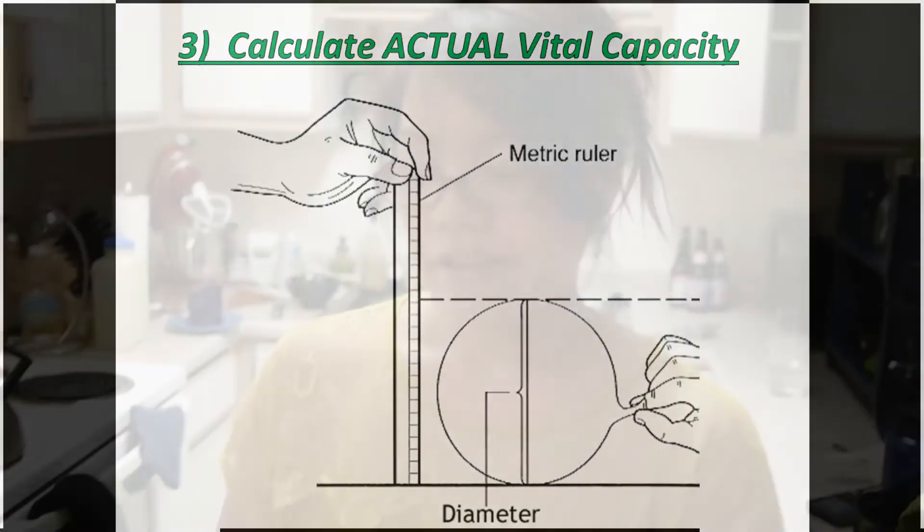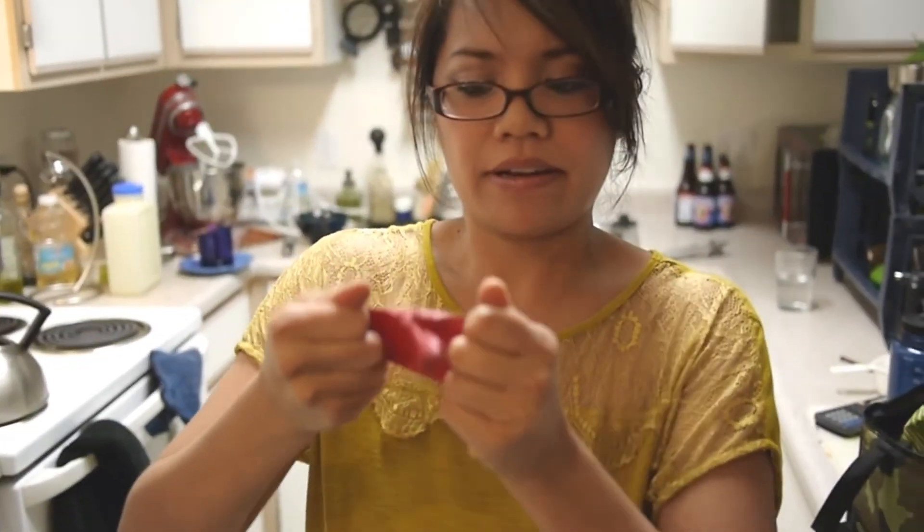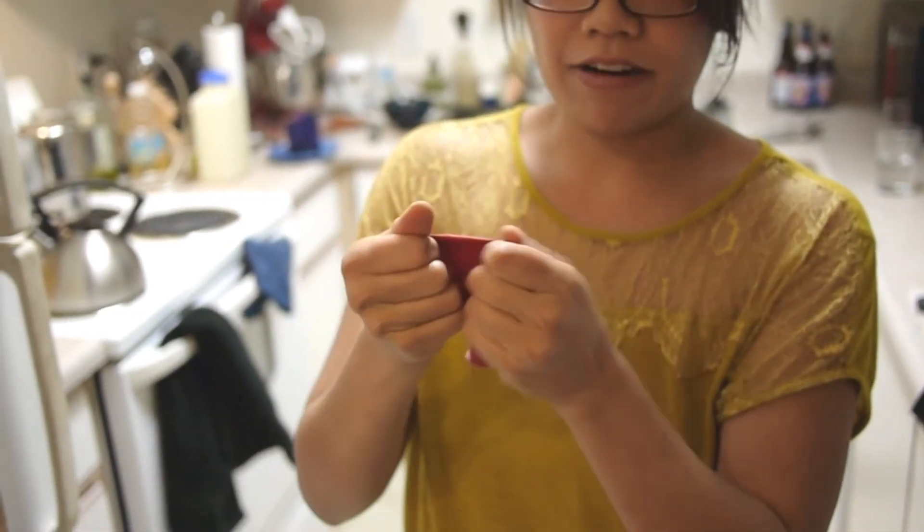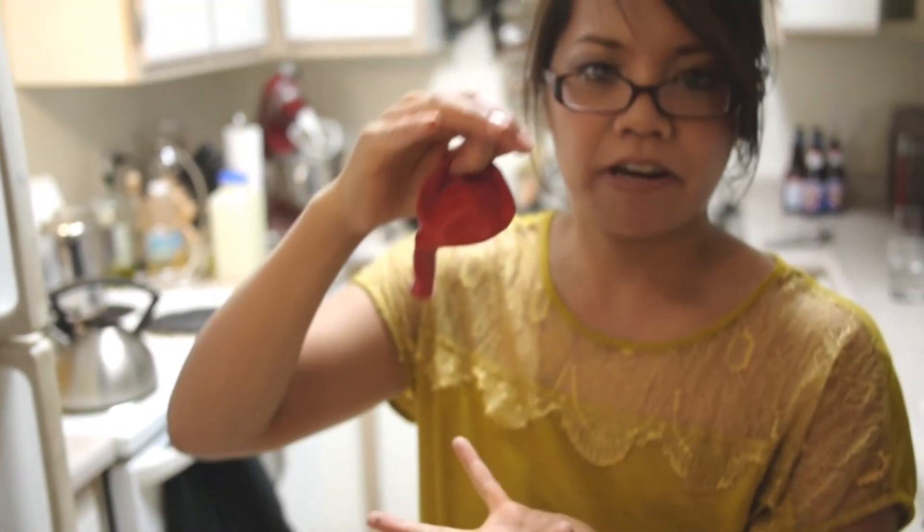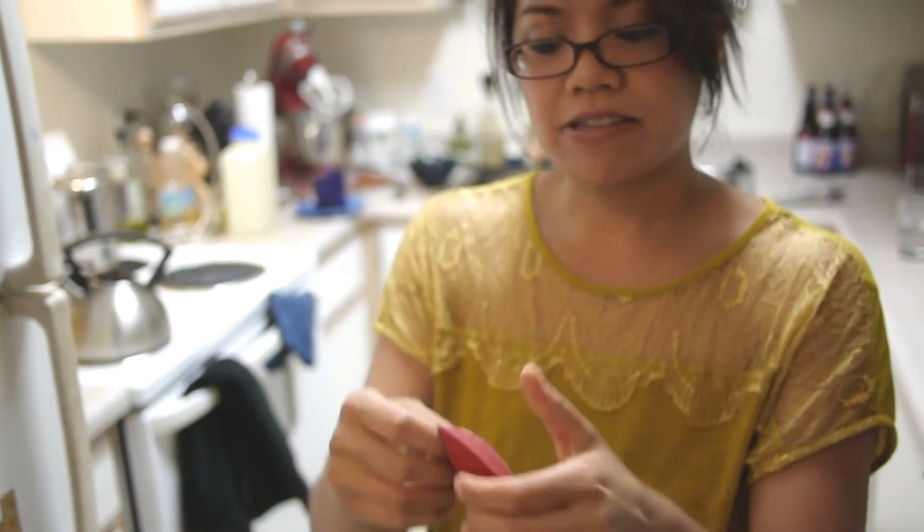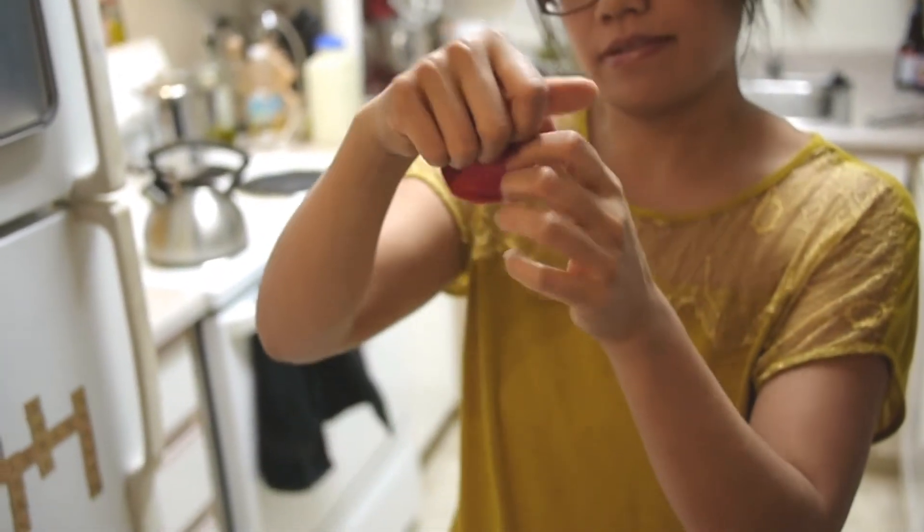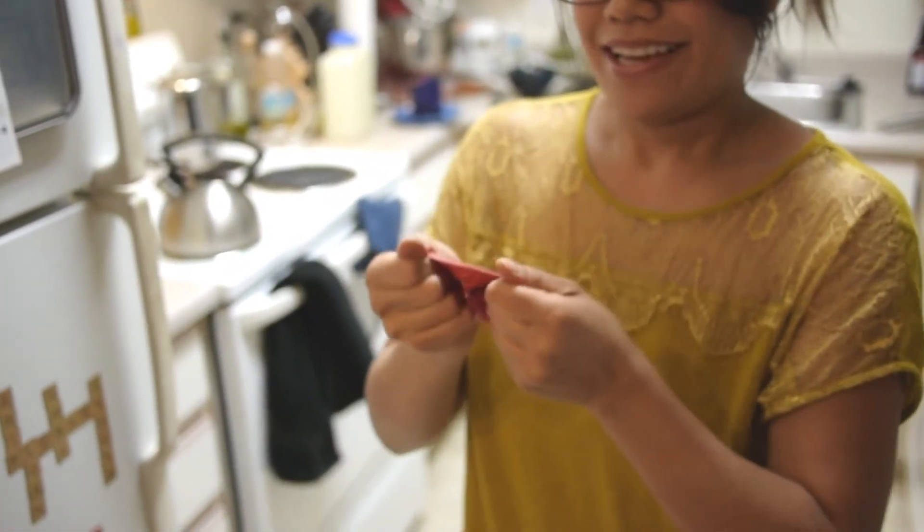Now in order to calculate my actual vital capacity without using a spirometer, I can simply use a balloon. First, take a balloon, stretch it out a bit. The goal is to blow as much air in it, but you also want it to be spherical. So let's try to stretch it out so you don't get that oval shape. And we're going to do this three times and see what the biggest diameter balloon I can breathe out, and that's the measurement I'm going to use.